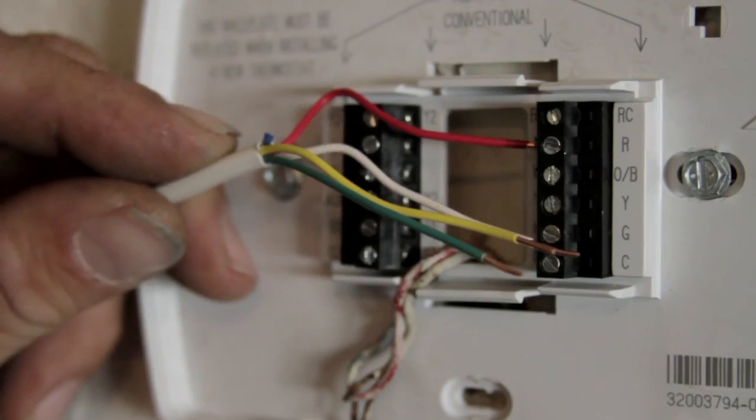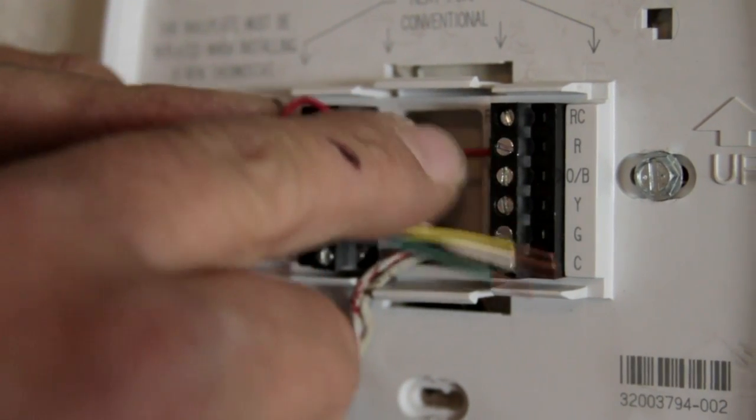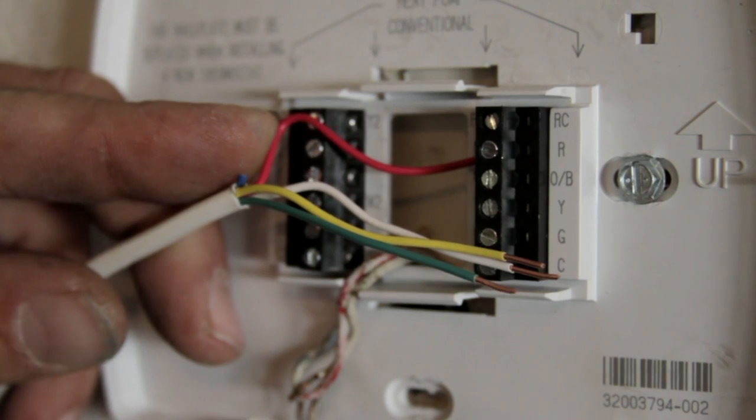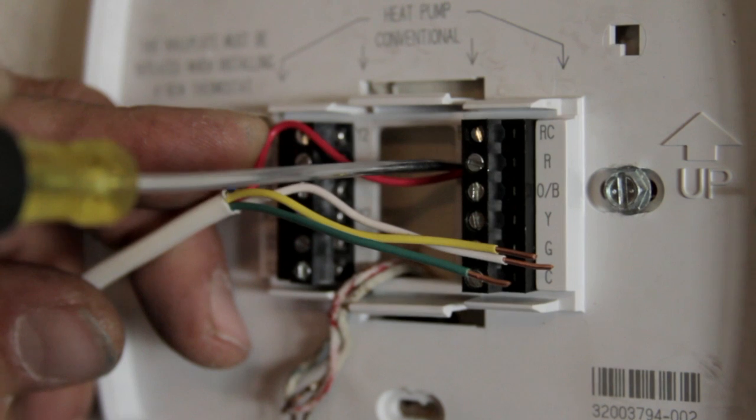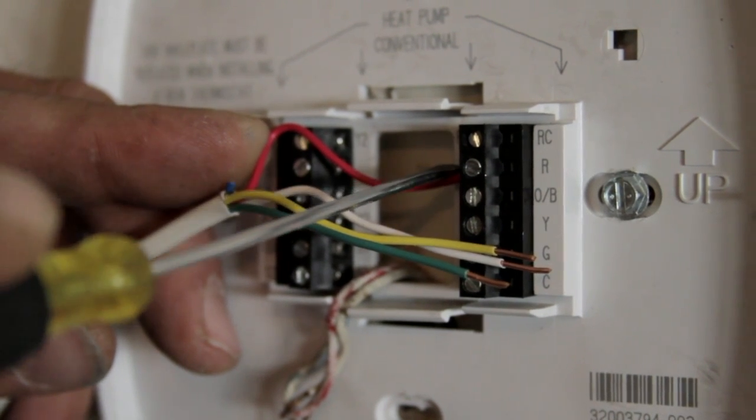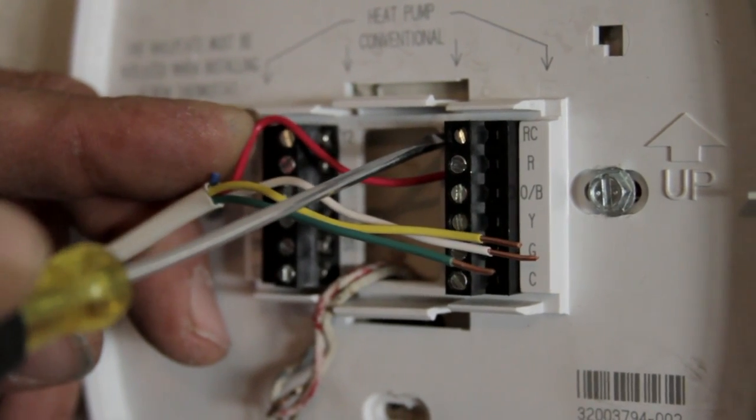With wiring a thermostat, what you're going to want to do is push the wires in. The biggest thing to remember is that on this thermostat there's an R and an RC. Now R represents 24-volt heating and RC represents 24-volt cooling.